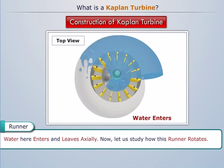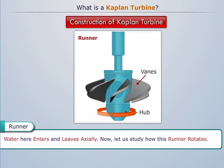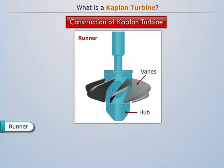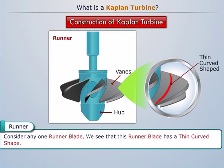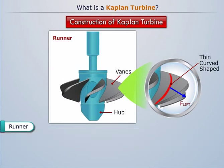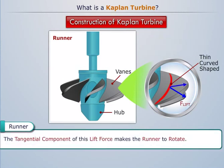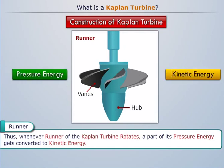Water enters and leaves axially. Now let's study how this runner rotates. Consider any one runner blade. This runner blade has a thin curved shape. As a result, whenever water flows through the hub, the water induces a lift force due to the airfoil effect. The tangential component of this lift force makes the runner rotate. Thus, whenever the runner of the Kaplan turbine rotates, a part of its pressure energy gets converted to kinetic energy.